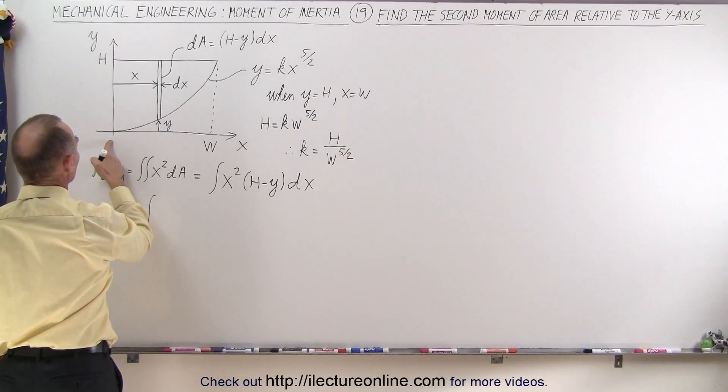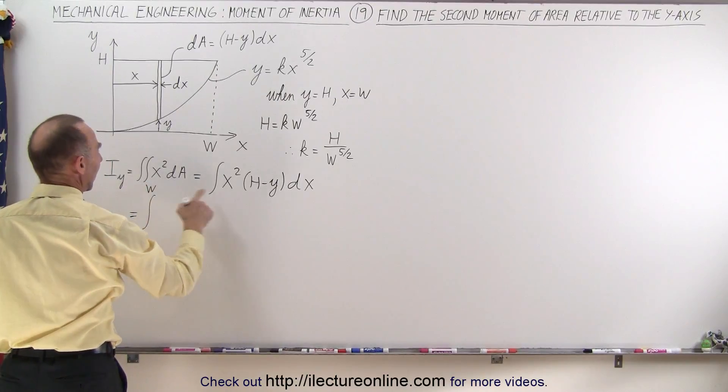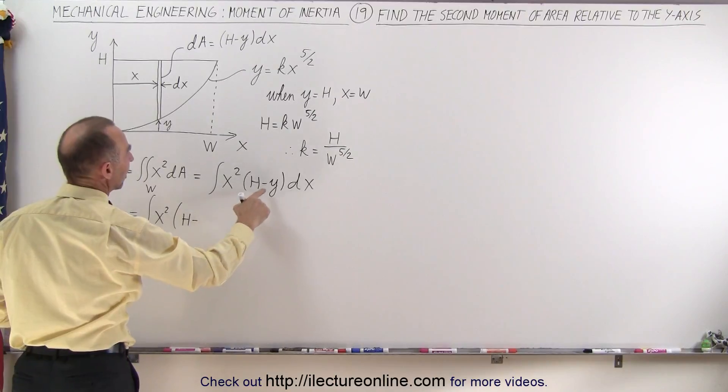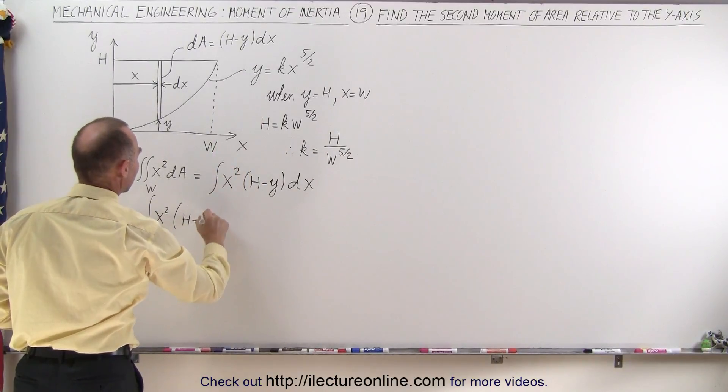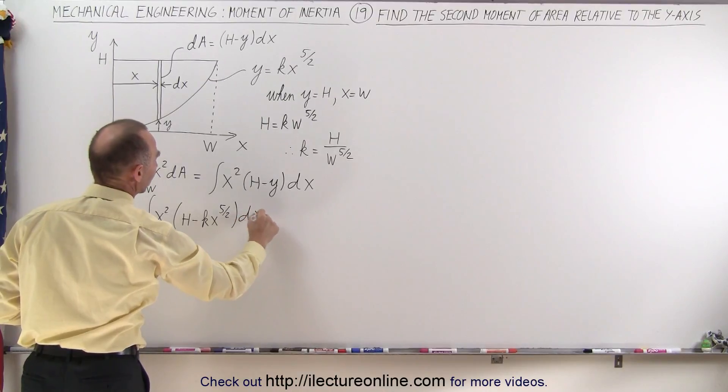So this is then equal to the integral, and of course we're going to integrate from x equals 0 to x equals w, and x squared times h minus, and instead of y we'll write kx to the 5 halves power times dx.